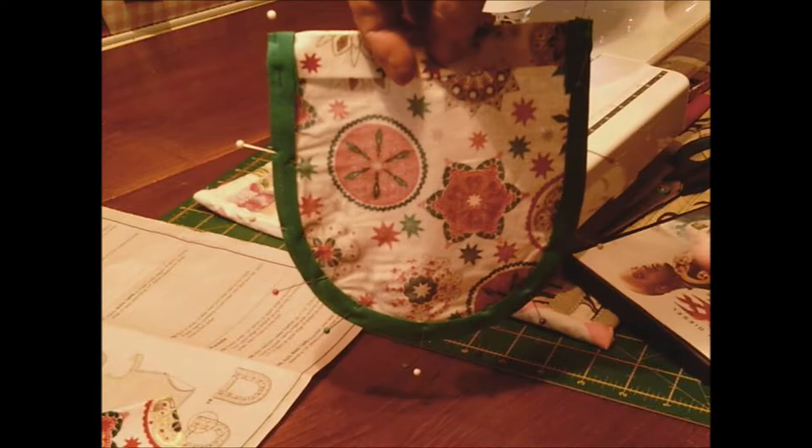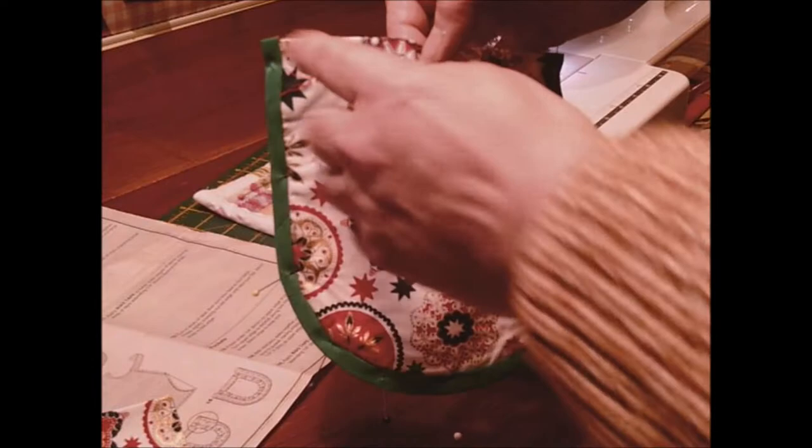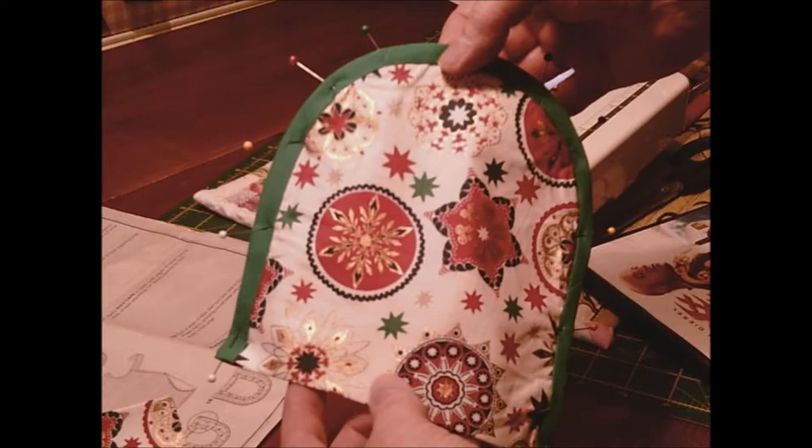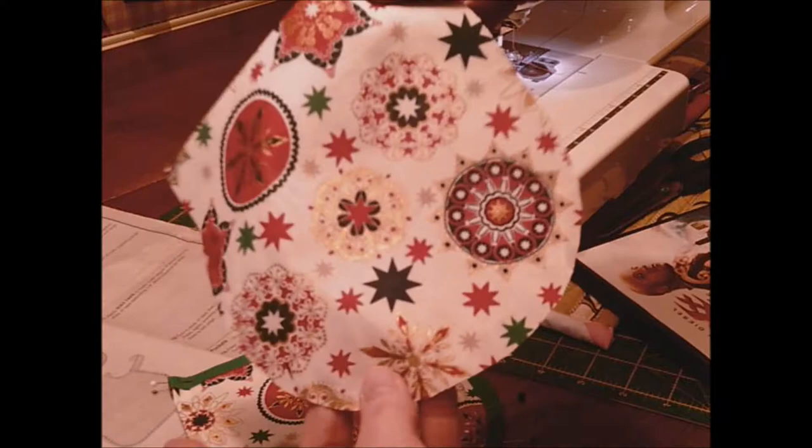Now I'm not going to hand sew this because I'm going to lay it down on the body, and they're going to make my life easier. I'm going to stitch in the ditch all the way and attach it to the apron at the same time as securing the bias tape. So I've just got one more to do and then we'll have a go at putting it and finding where it goes on the body.